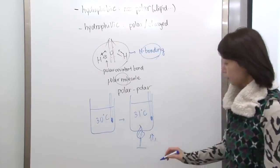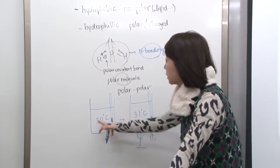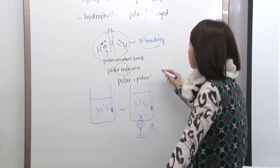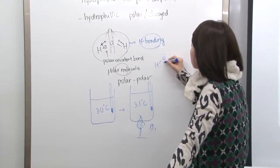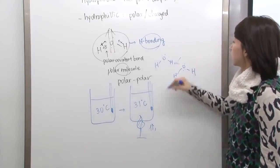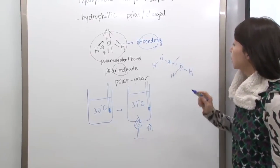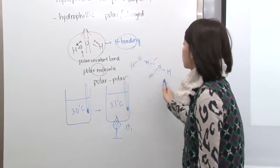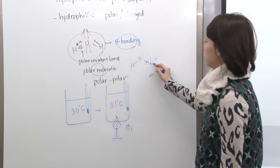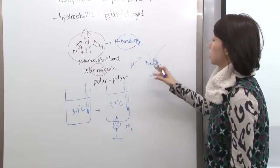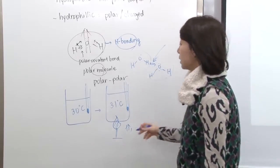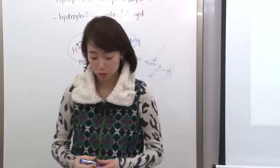If specific heat is high, it means you need more energy to increase the temperature. Increasing temperature usually breaks the bonding between water molecules, making them more active. If the bond is very strong, you must apply more energy to break it and make molecules more mobile. So high specific heat means high intermolecular force.